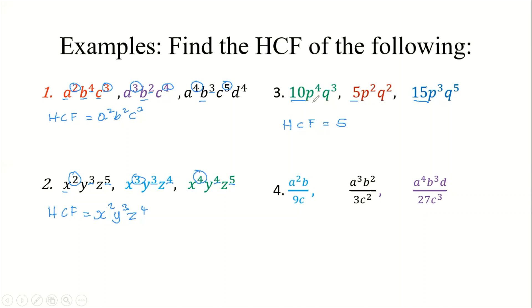Now we look at the variables. P is common to all three terms, with powers of four, two, and three. The lowest power is p². Then we look at q, with powers of three, two, and five. The lowest is q². Therefore, the HCF of these algebraic terms is 5p²q².